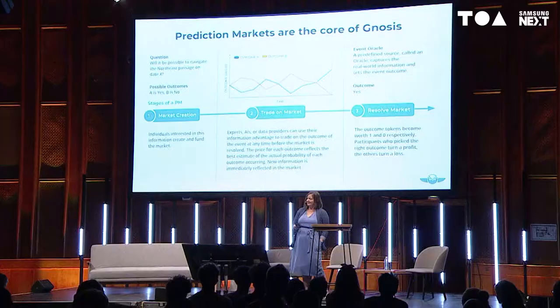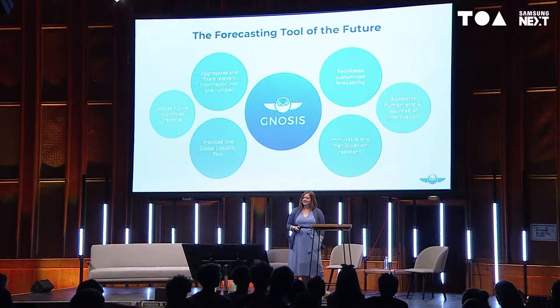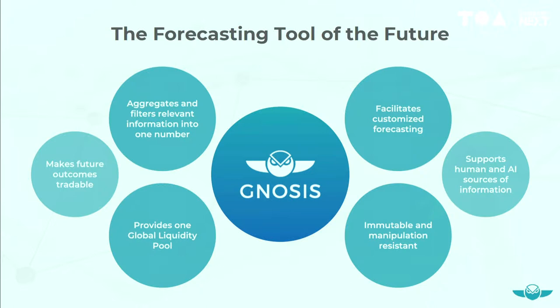To sum up: why would you want to do this? You make future outcomes tradable, which helps you aggregate and filter relevant information into one number. It also facilitates custom forecasting — there are things you can't find information on on the internet, so you incentivize experts to share their knowledge. And it supports both human and AI sources of information — most questions in this interface would be answered by bots with good data who can trade accordingly.